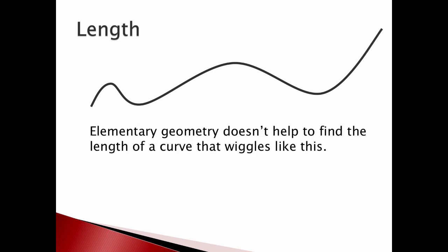Arc length is really just how long a curve is. If you have a straight line or a circle, we know how to find the length of a line and the circumference of a circle. But if we have something wiggly, geometry doesn't really help. There's no formula for that kind of wiggly curve.